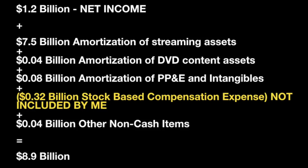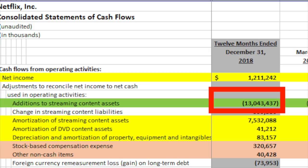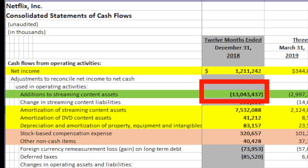That sounds much better than $1.2 billion, but now we have to account for the average annual capital expenditures needed to fully maintain the long-term competitive position and unit volume of the business. There are two types of capital expenditures: expenditures for growth, and expenditures that maintain the business as-is — maintaining its competitive position and the status quo. The biggest expense for Netflix is content, and they have to acquire it. For me, it's not an investment in growth, because they scale on the number of users — it's not that buying more content gets them more users. It's just their business. They have to acquire content, so it's an investment necessary to maintain their competitive position.